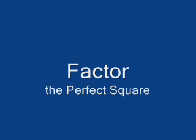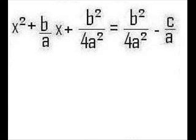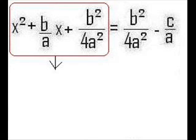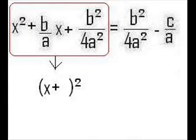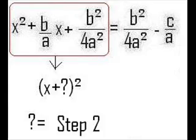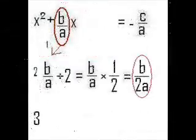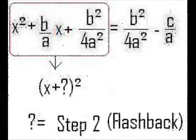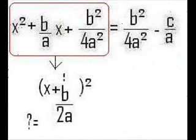Now we must factor the left hand side. It's not an easy expression to factor. There's a shortcut, however. If we use step 2 from completing the square, that expression is what should go in the factor for the question mark: b over 2a.